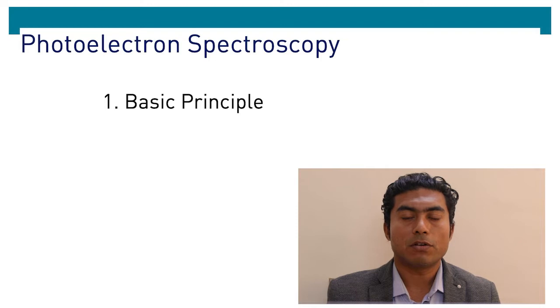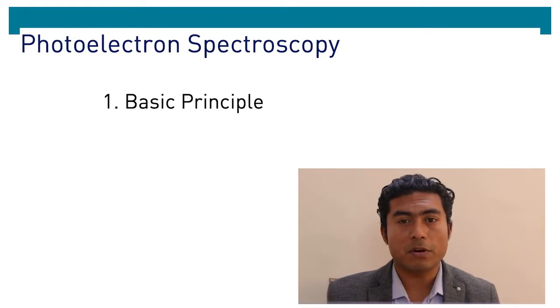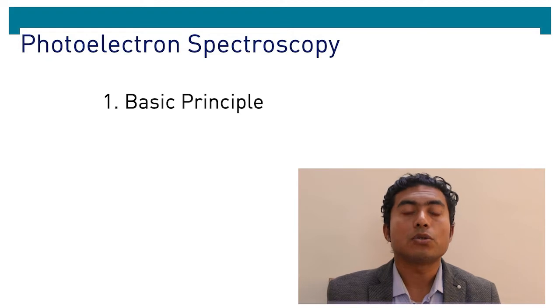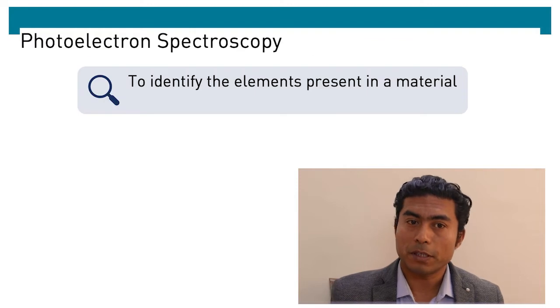The basic principles of photoelectron spectroscopy. In spectroscopy, we study the interaction of electromagnetic radiation or light with a material or sample. From the interaction we derive many information about the sample. So what kind of information do we obtain from photoelectron spectroscopy?